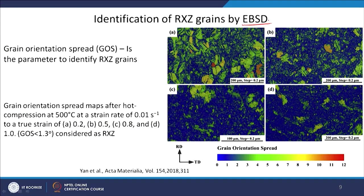There is another very important characterization technique mentioned earlier — electron backscatter diffraction (EBSD). This is one of the most important techniques now to characterize the recrystallization process in a material. In this technique, you find out the orientation of each grain — specifically the orientation of the unit cell and how it is oriented in different grains.